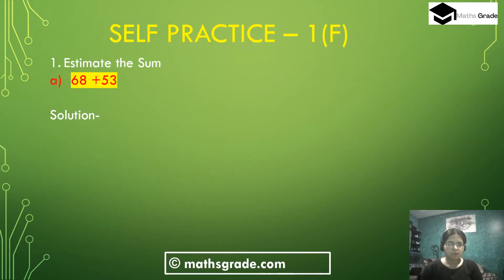Question number 1, estimate the sum. First we take 68 plus 53. We have to first round off 68 and 53 to the nearest 10, then add these numbers. In 68, the unit digit is 8, which is more than 5.